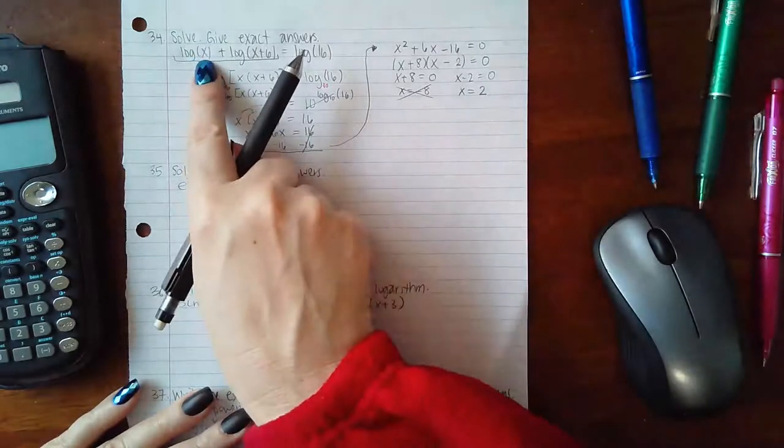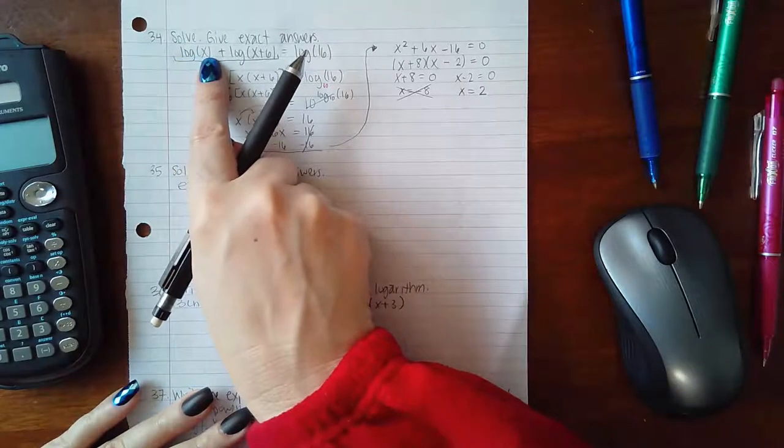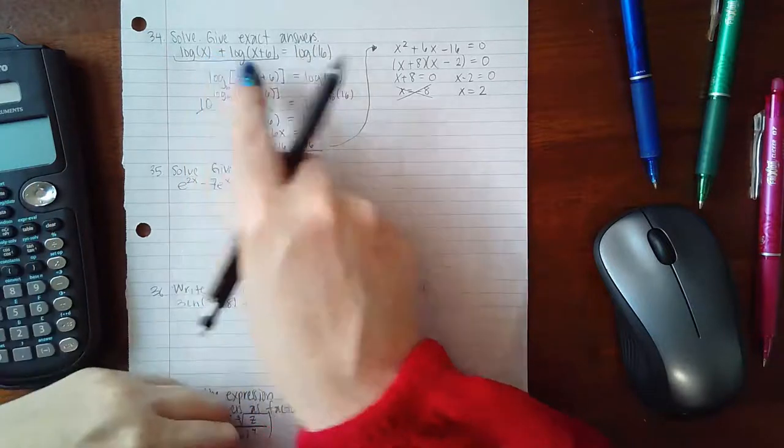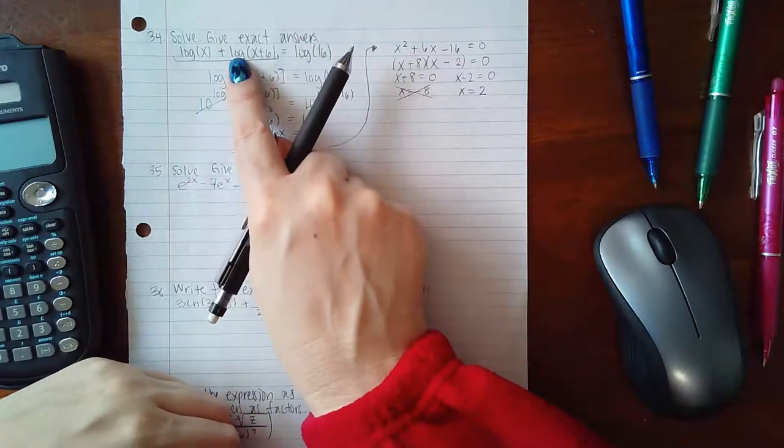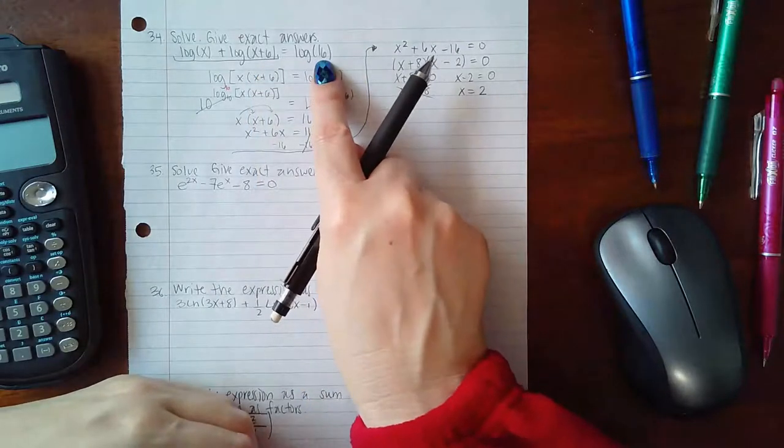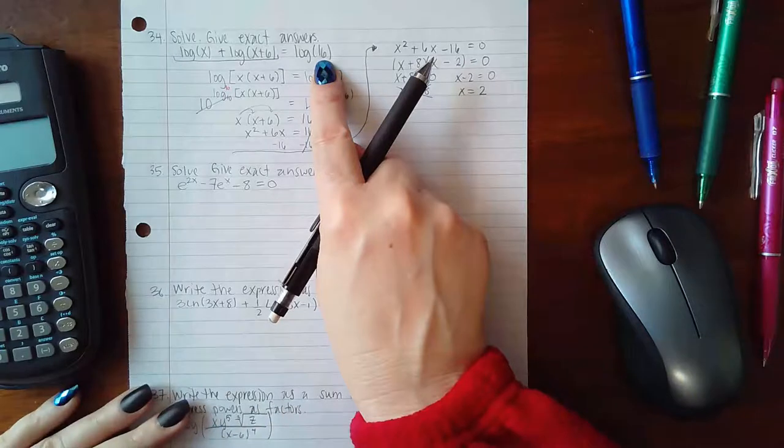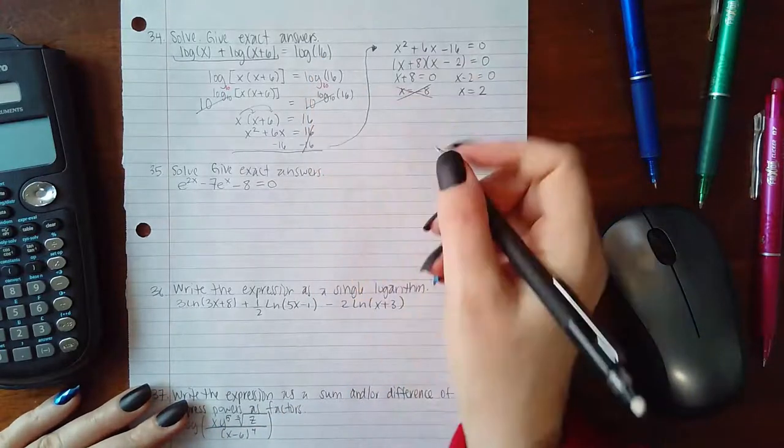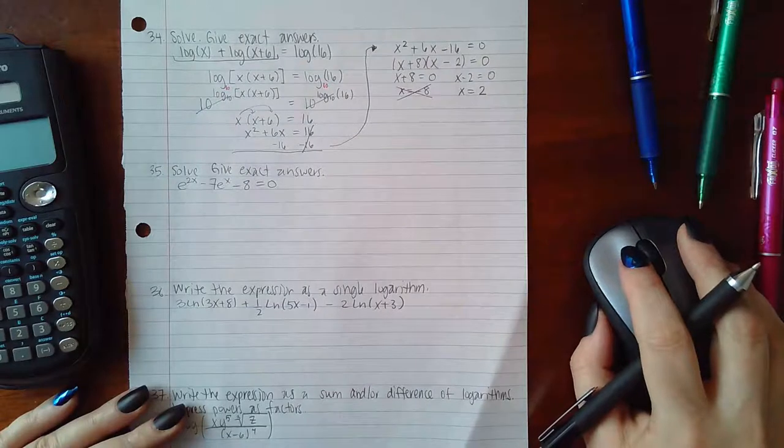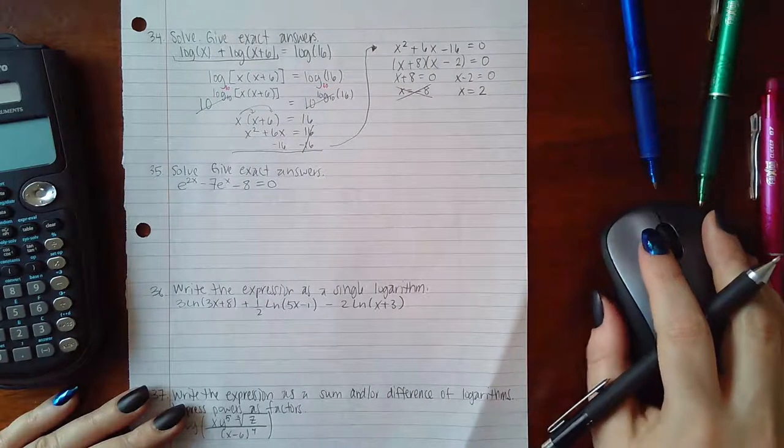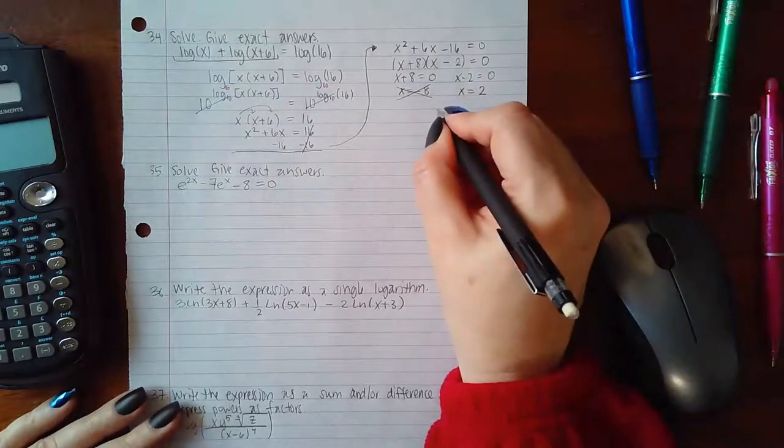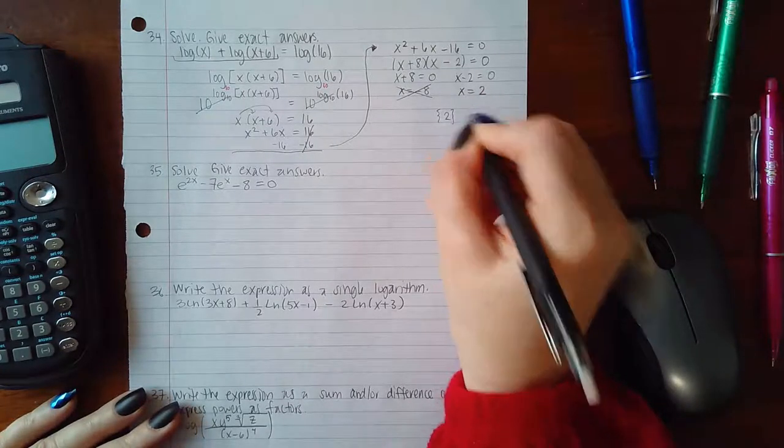I need to check the value 2. If I plug in 2 here, I get log of positive 2, that's okay. If I plug 2 here, I get log of positive 8, that's okay. And this is already log of positive 16, so that's good as well. This is going to be my only solution. When we write our answer in solution set, it's going to be a brace with a 2 inside.